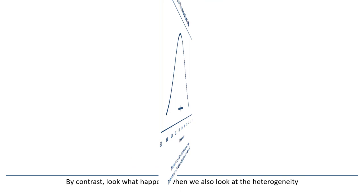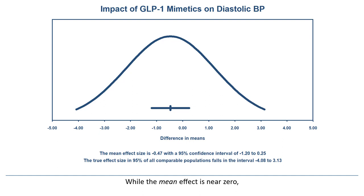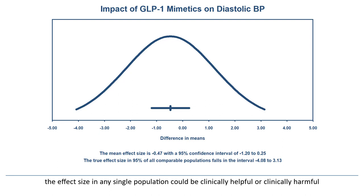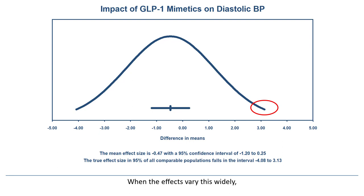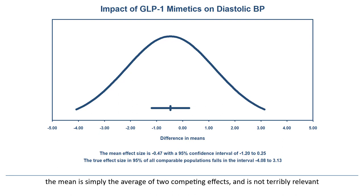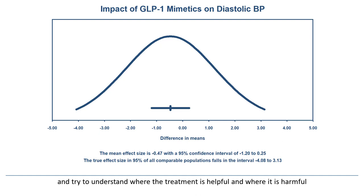By contrast, look what happens when we also look at the heterogeneity. While the mean effect is near 0, the effect size in any single population could be clinically helpful or clinically harmful. At one extreme, there are some populations where the drug reduces blood pressure by as much as 4 mmHg, and at the other extreme, there are some populations where the drug increases blood pressure by as much as 3 mmHg. When the effects vary this widely, the mean is simply the average of two competing effects and is not terribly relevant. Rather, we need to focus on the dispersion itself and try to understand where the treatment is helpful and where it's harmful.